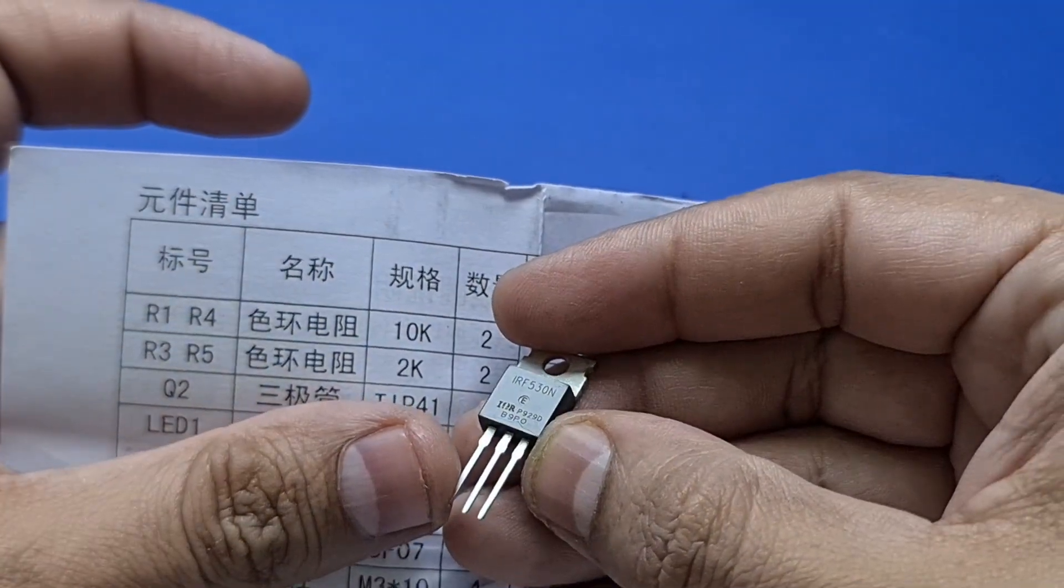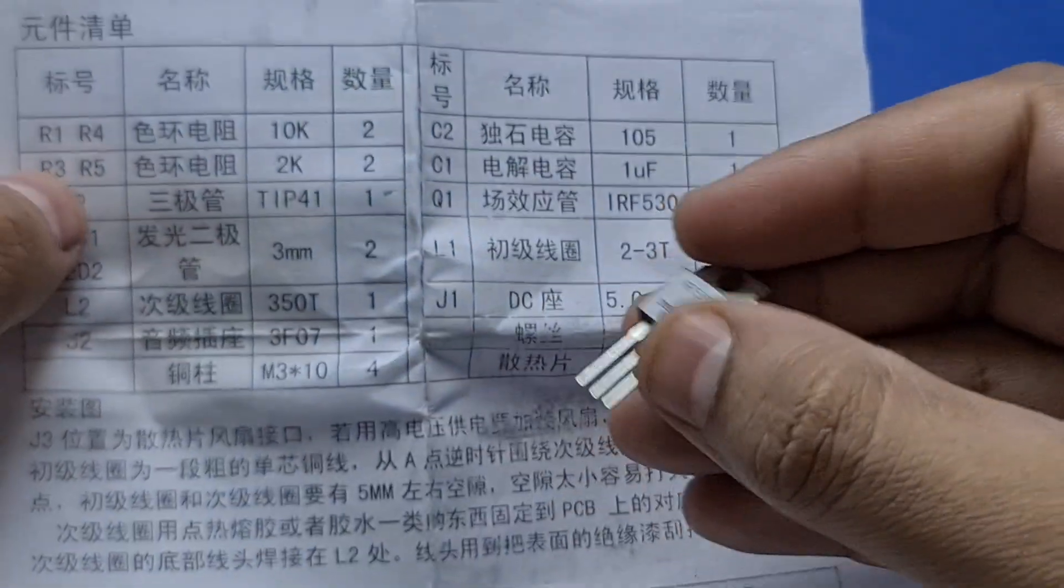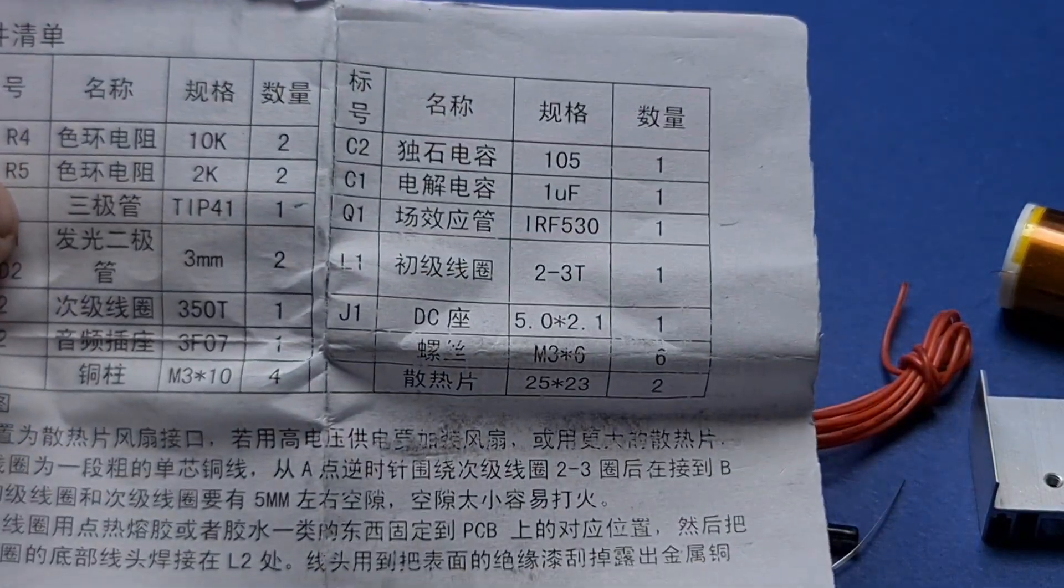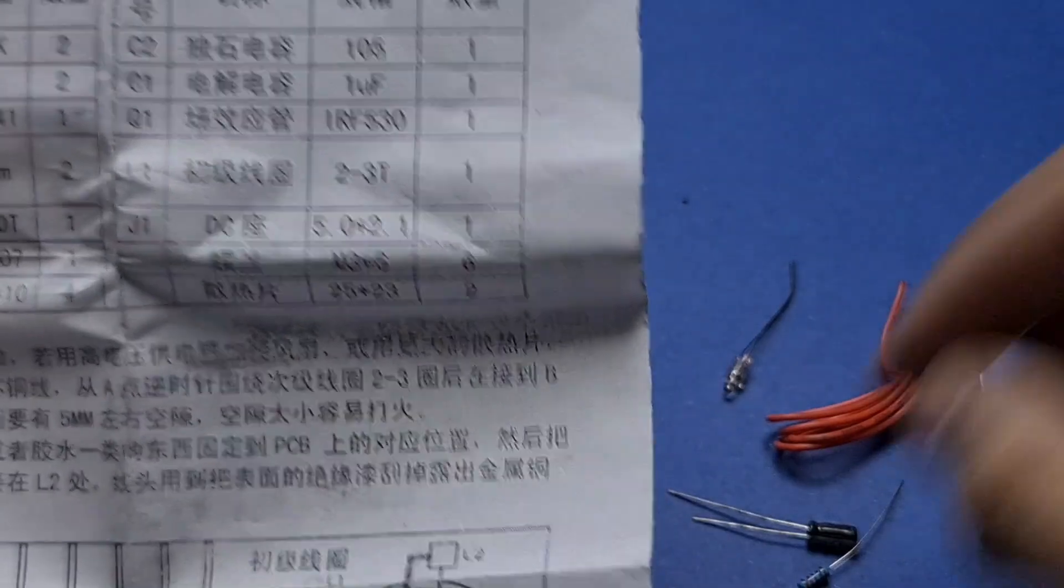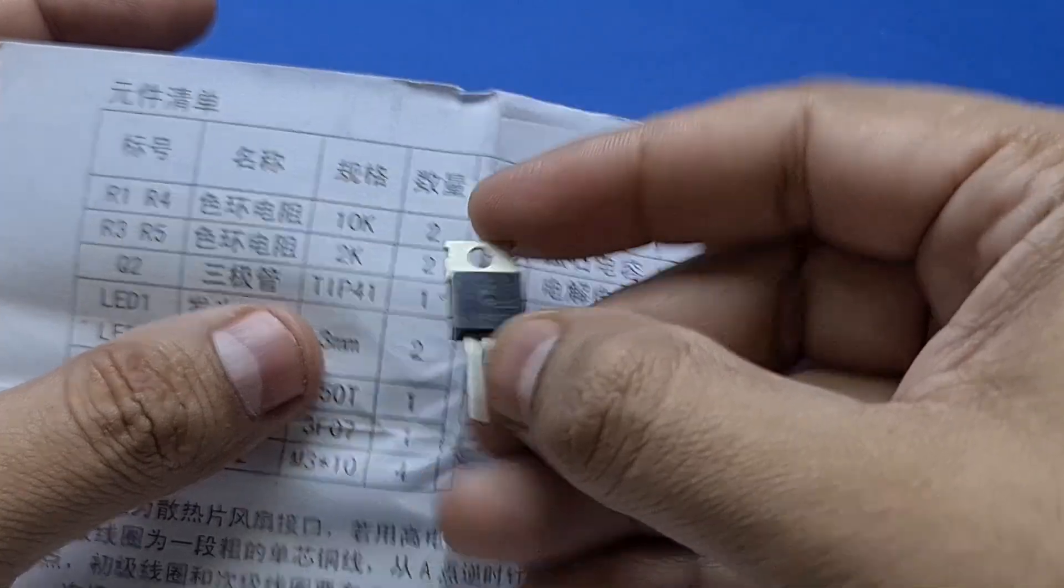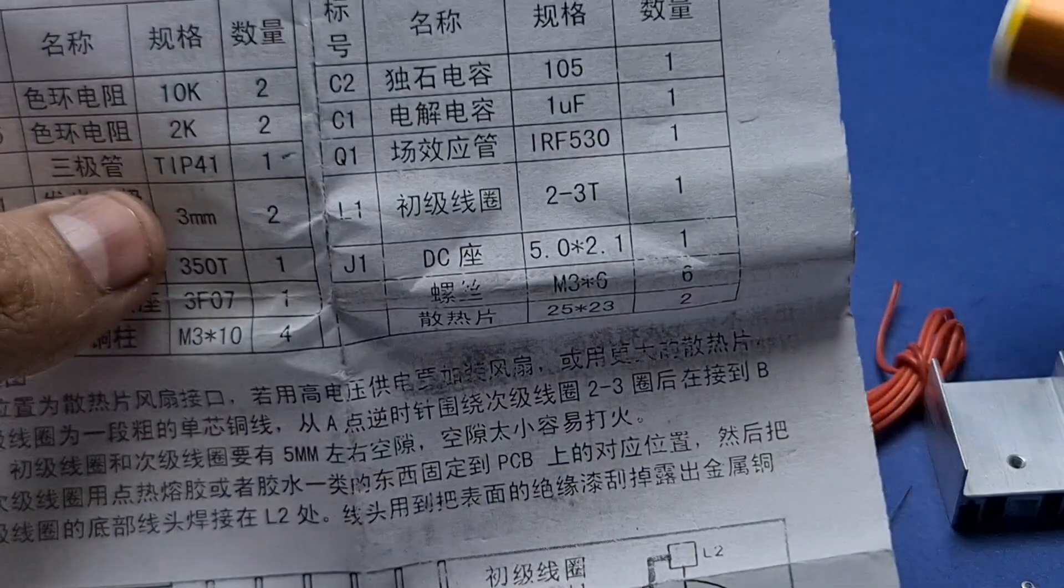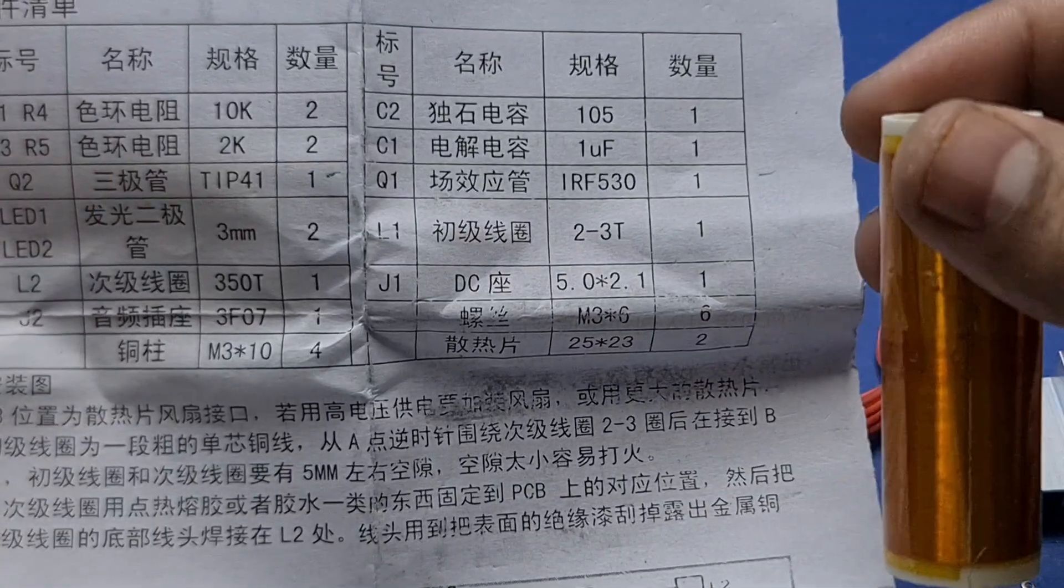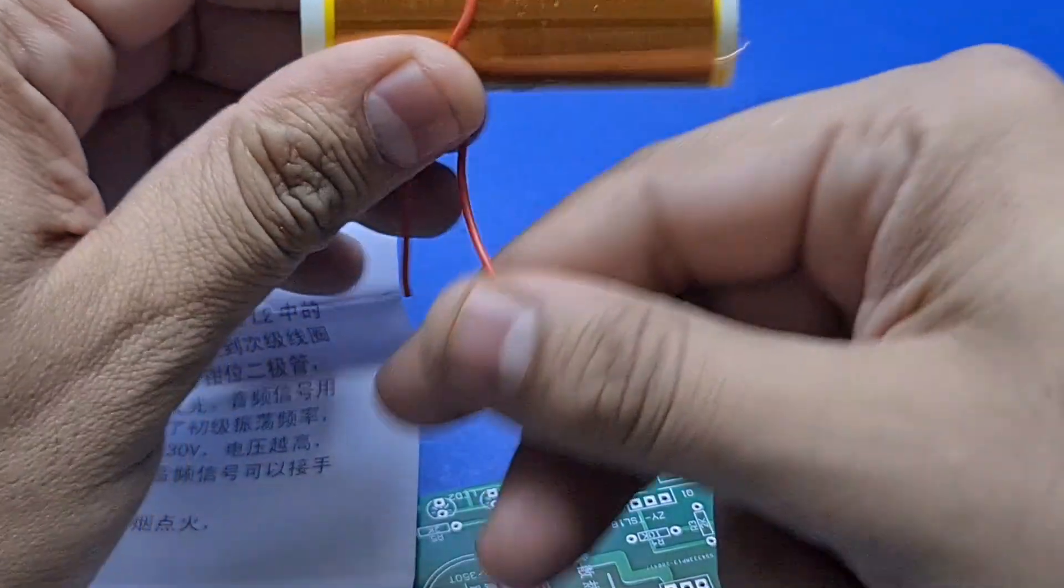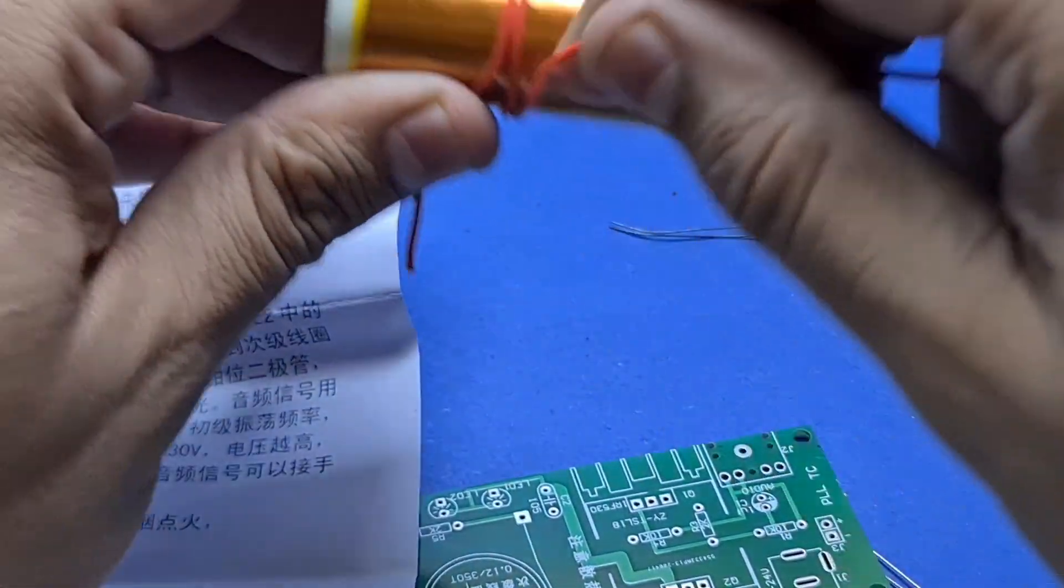The MOSFET used in this circuit is IRF530, which has a gate source voltage limit of 20 volts, so make sure you never give the circuit above 20 volts otherwise it will burn instantly. They've also used a TIP41 transistor, which is a power transistor, and here is the wire that we will wind over the Tesla coil.